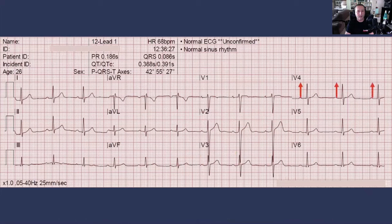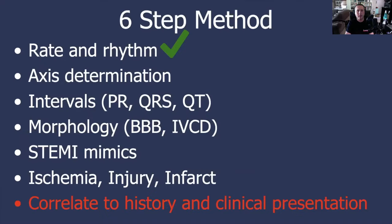This is highly dependent on accurate lead placement, and we in medicine are not legendary for the accuracy of our lead placement. Even when there is poor R wave progression, it can be a nonspecific finding, but there are times — like when trying to differentiate between early repolarization and acute anterior STEMI — that your knowledge of R wave progression can be your best friend. So let's give ourselves a check mark next to axis determination and go on to intervals.